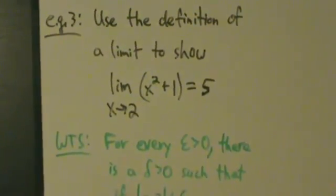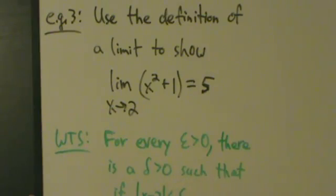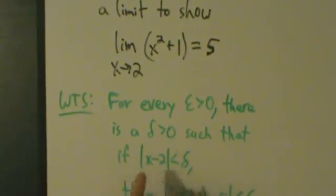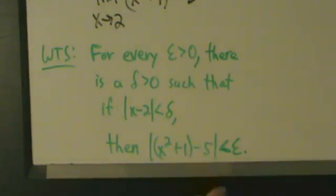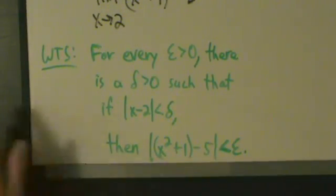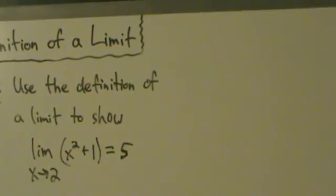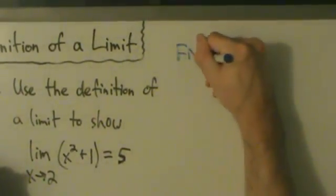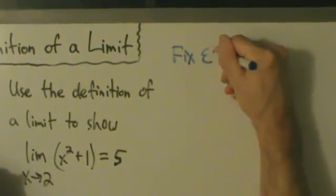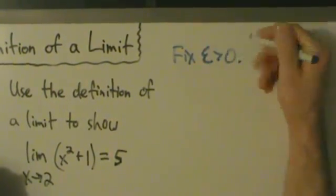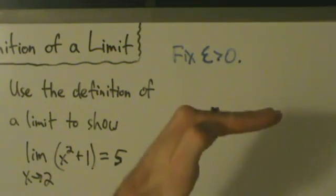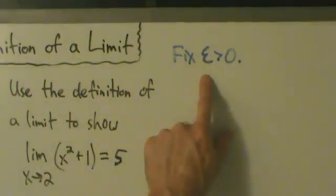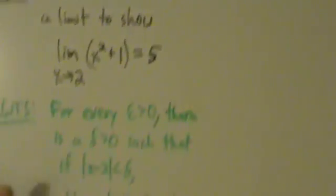We want to show that for every epsilon greater than 0, there is a delta greater than 0, such that if the absolute value of x minus 2 is less than delta, then the absolute value of x squared plus 1 minus 5 is less than epsilon. So let's start working on that. First, fix epsilon greater than 0. We're given an epsilon that's positive, and we're going to give back a delta that probably depends on this epsilon, such that this is all satisfied.